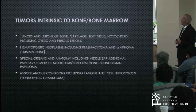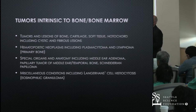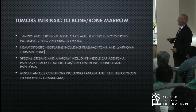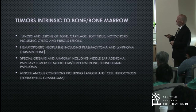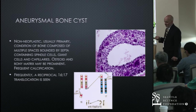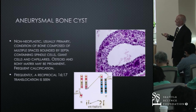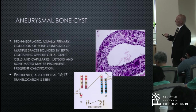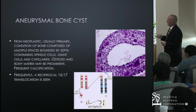Moving to tumors intrinsic to the bone and bone marrow, we have to expand beyond meningeal, neuroendocrine, and nerve sheath tumors to include hematopoietic elements, as well as primary lesions of bone, cartilage, and soft tissue. Aneurysmal bone cysts are fairly common — neoplasm or non-neoplasm depending on your definition — composed of cystic spaces with characteristic mesenchymal cells including giant cells. A frequent translocation between chromosomes 16 and 17 is a common finding on analysis of these tumors.